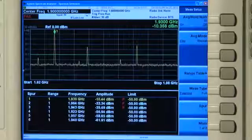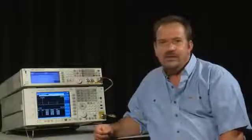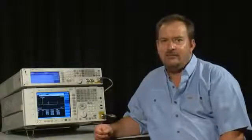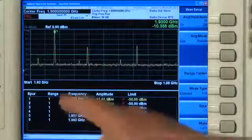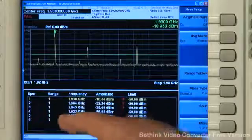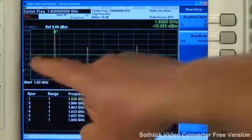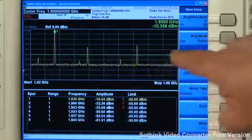You can select the values for resolution bandwidth and video bandwidth, and you can even set your own pass-fail limits. Here I'm sweeping frequencies just in range 1, and you can see I have a limit line set at minus 50 dBm, shown by the green line on the screen.